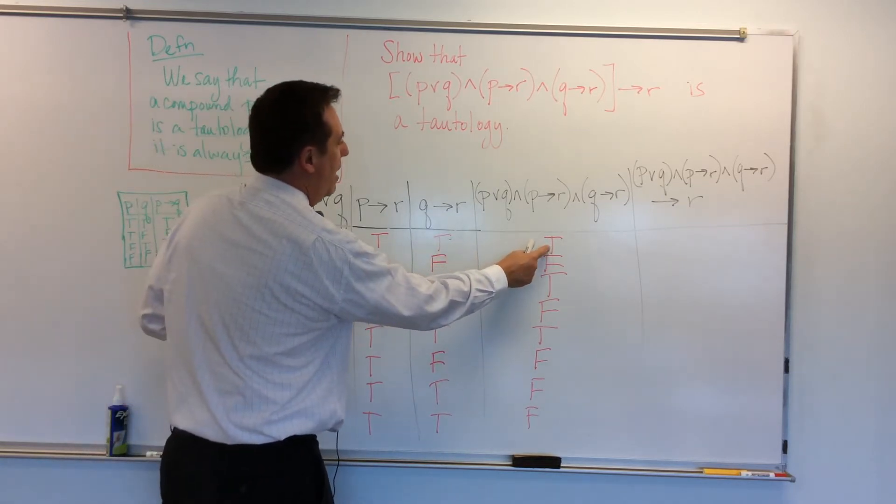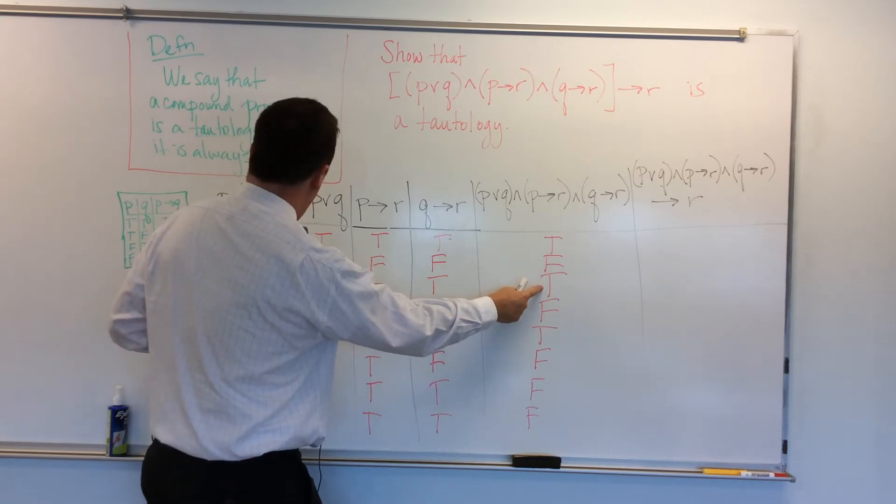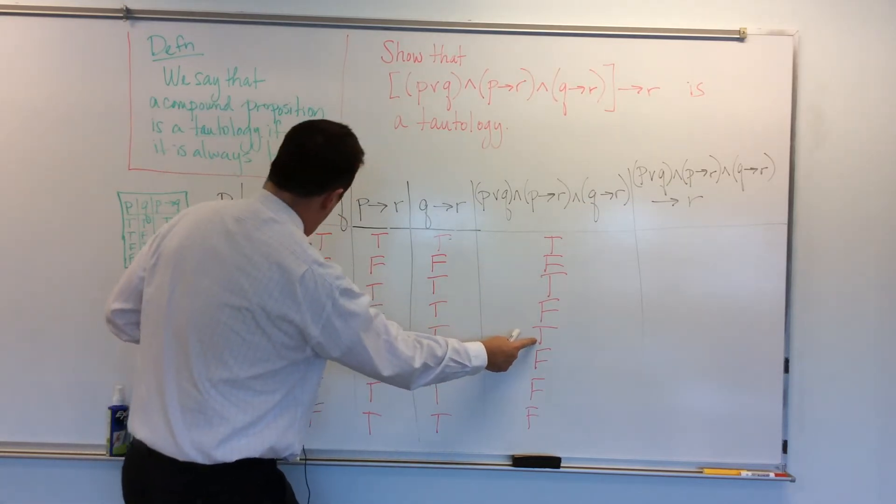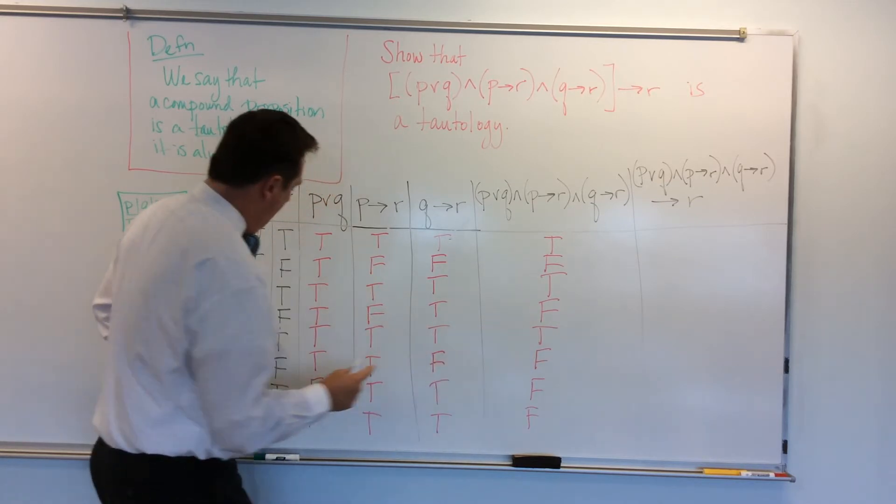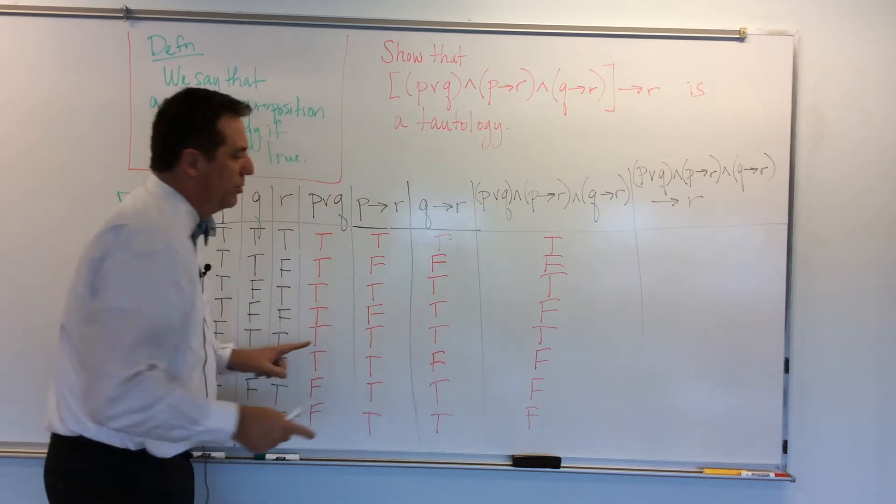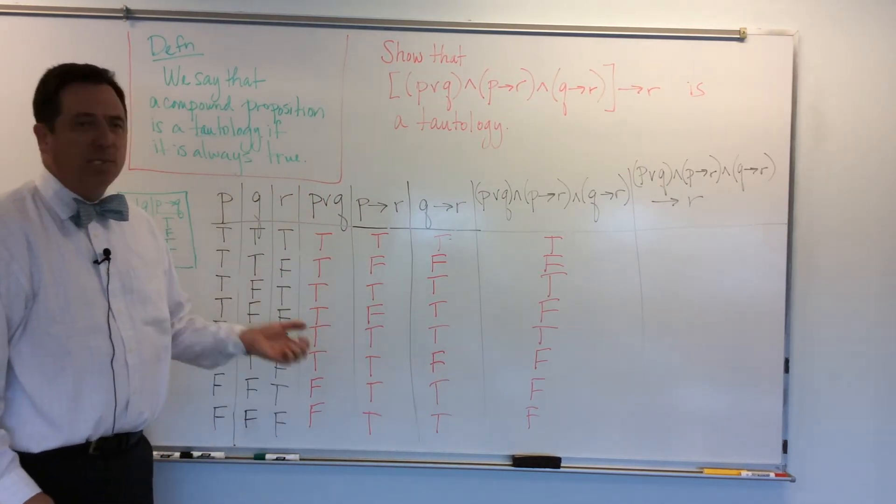True, so let's do that very carefully. So here, I have true implies true. Okay. Here I have a true, but that also implies true. Here I have a true, but that implies true. True, and then I don't have any other trues in my hypothesis, so they can't possibly be false.